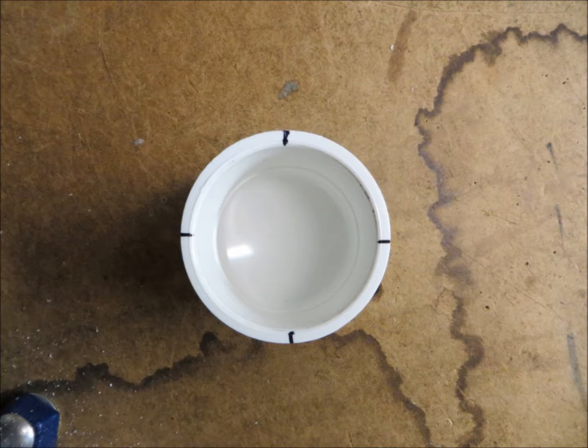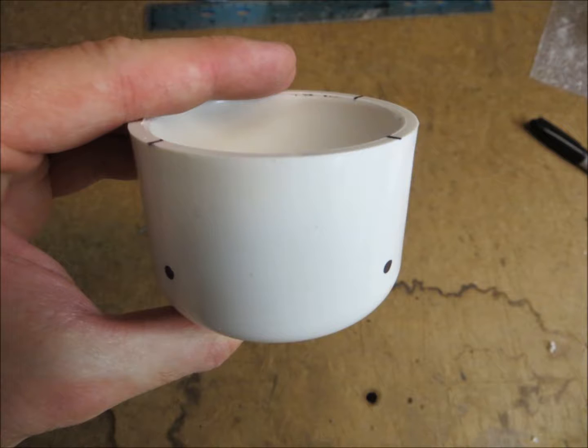We started by marking the four positions where the driven elements would connect. We did this on the top first, then drew corresponding marks on the side of the cap, about three-quarters of the way down. And then, oh yeah, I got to use the drill, and it was awesome.